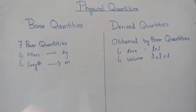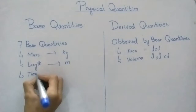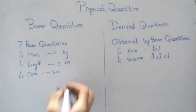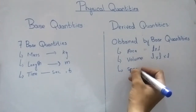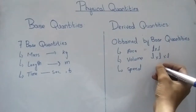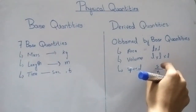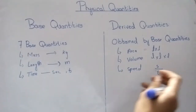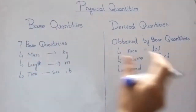Let's take another example. Time is a base physical quantity with the unit second, represented by T. Speed is a derived quantity: speed equals distance divided by time. Distance is a base physical quantity (length), and time is also a base physical quantity. So speed is derived by dividing one base physical quantity by another.